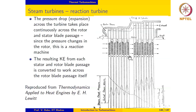The RPM of the reaction design is expected to be the lowest among all four designs because the pressure drop is continuous and distributed across both the stator and the rotor. These are the four strategies used to handle the very high expansion ratios seen in steam turbines.